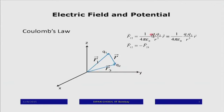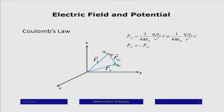Depending upon whether the product q1 q2 is positive or negative, we have either a repulsive force or an attractive force. What one does very frequently is to write this instead as r cube in the denominator with a vector r in the numerator — that is the same thing, the inverse square law. And since by Newton's third law, the force on 2 due to 1 equals the force on 1 due to 2 with a negative sign: F12 = −F21.